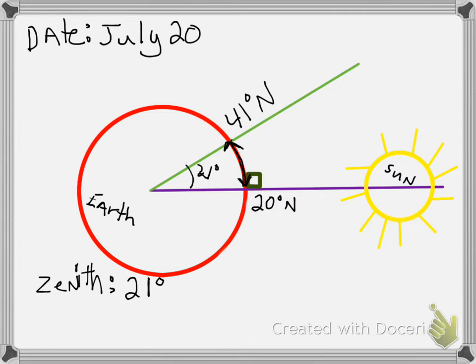So now to find the Sun angle, I'm going to take 90 minus my Zenith, which is 21 degrees, and I will get the answer of my Sun angle. So 10 minus 1 is 9, 8 minus 2 is 6, 69 degrees Sun angle.